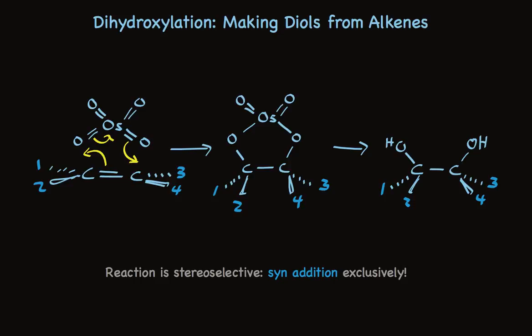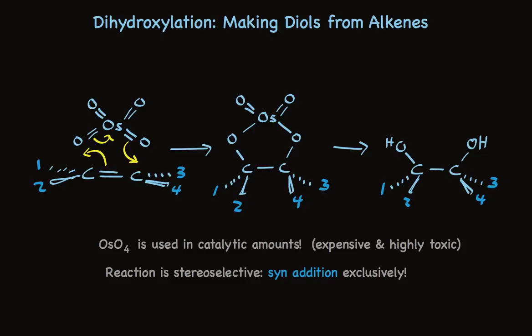It's worth noting a couple of things about osmium tetroxide. This is a very expensive reagent and is highly toxic. Fortunately, conditions have been developed that let us use osmium tetroxide in catalytic amounts. The osmate ester is released to the diol during the reaction, and the osmium tetroxide is regenerated. This makes using osmium tetroxide for dihydroxylation much more practical.